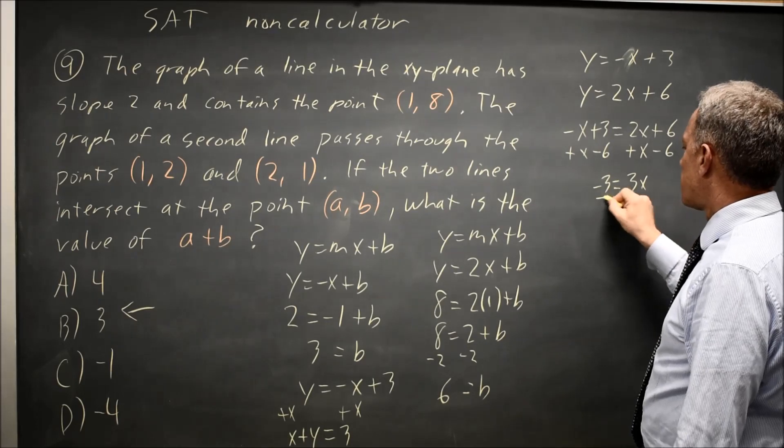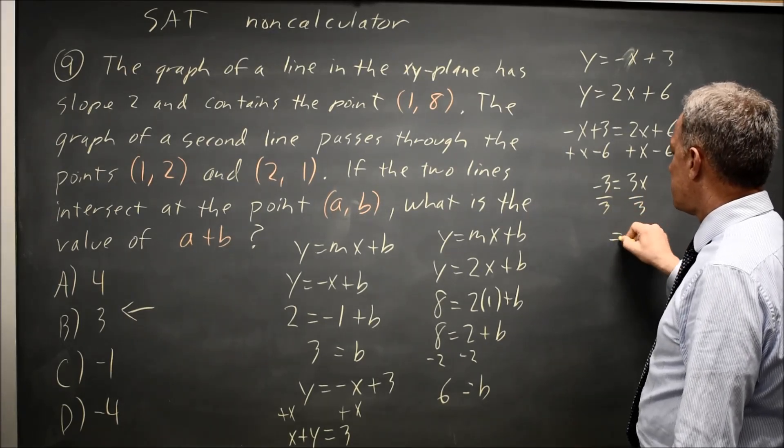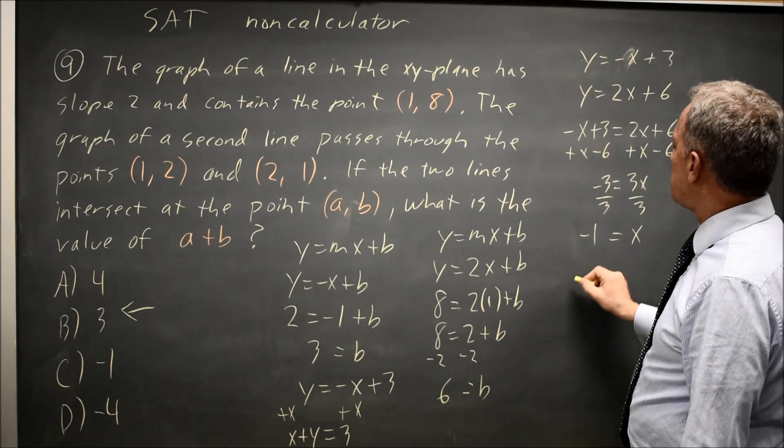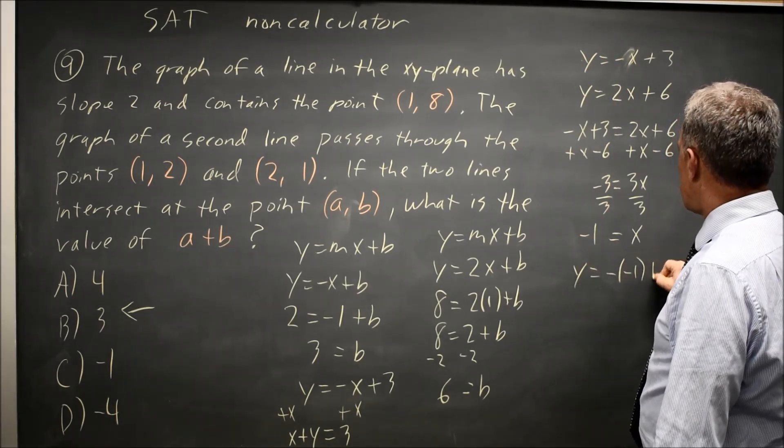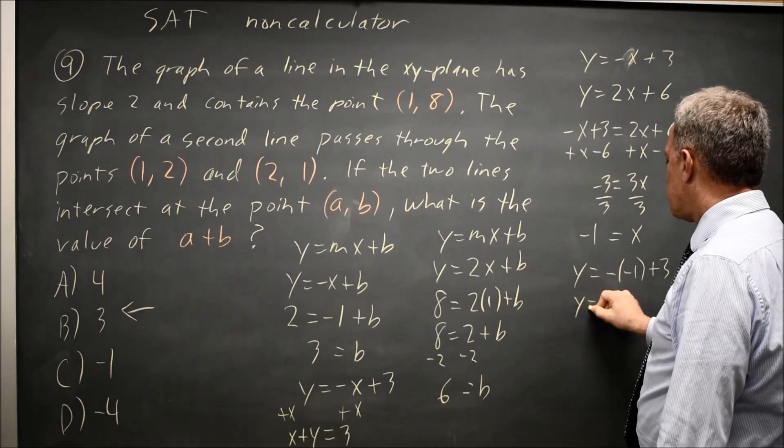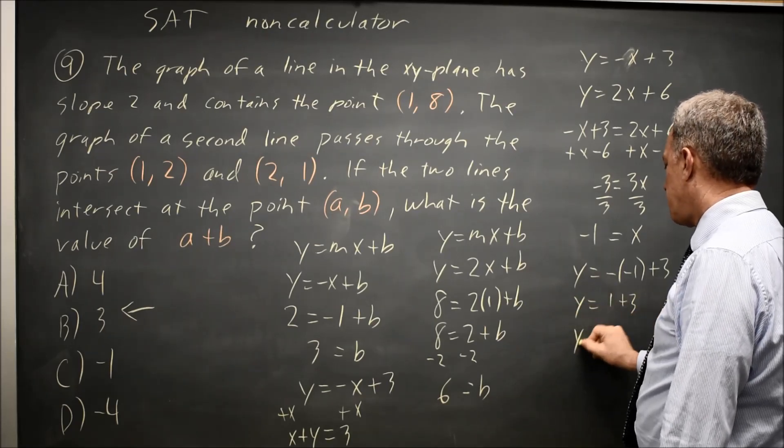Divide both sides by 3, and I'll get x by itself. x equals negative 1. If x is negative 1, y is negative x plus 3, so y equals 1 plus 3, y equals 4.